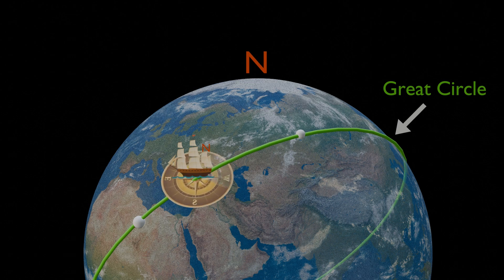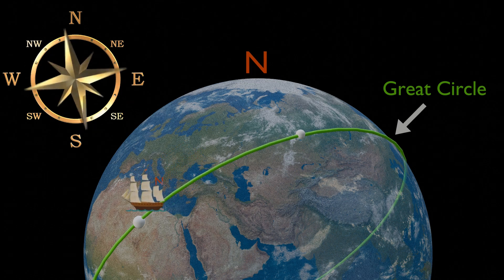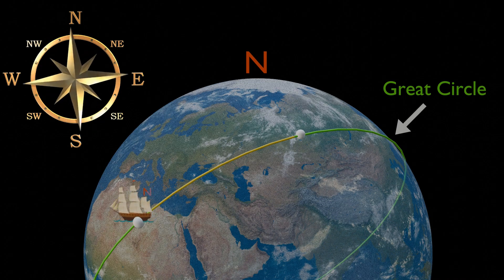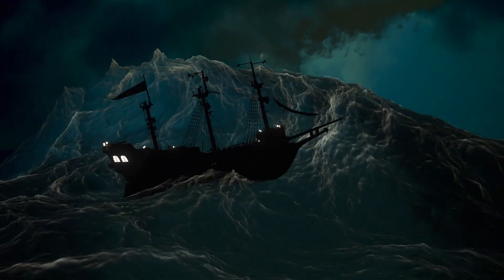Yet the compass was an unpredictable guide, its needle constantly shifting and swaying. This instability posed significant challenges in maintaining a steady course, making long-distance travel fraught with uncertainty and danger.